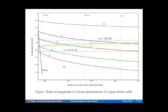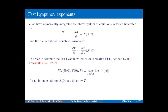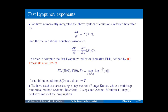In this plot we have the order of magnitude of various perturbations as a function of distance from the center of the Earth, where GM stands for the attraction of the spherical Earth. We then have the perturbations by harmonics J2, J22, and so on, as well as Sun, Moon, solar radiation pressure with different coefficients for area-to-mass ratio, and atmospheric drag. We numerically integrated the whole system of equations and computed the first Lyapunov indicator using a fourth-order predictor-corrector Adams method.